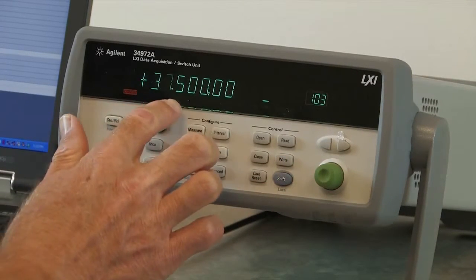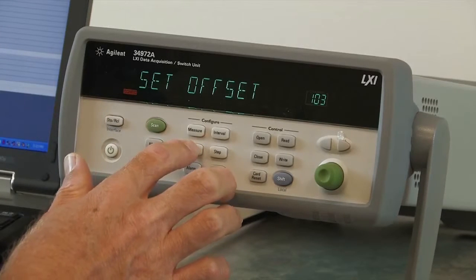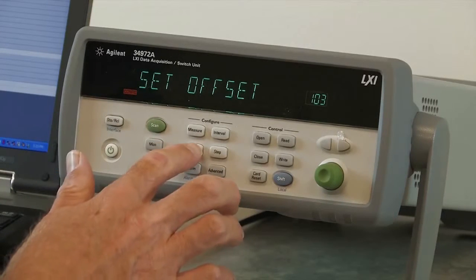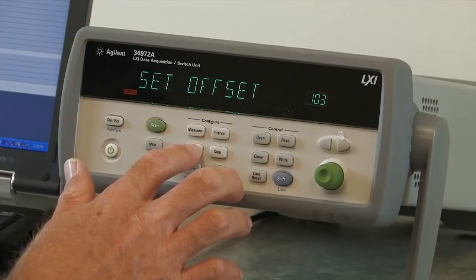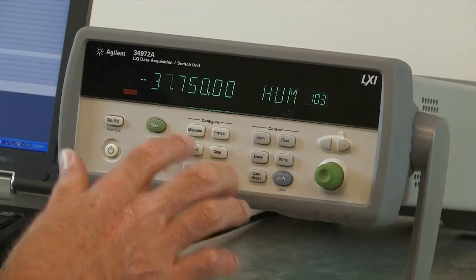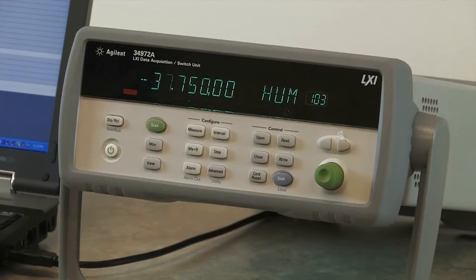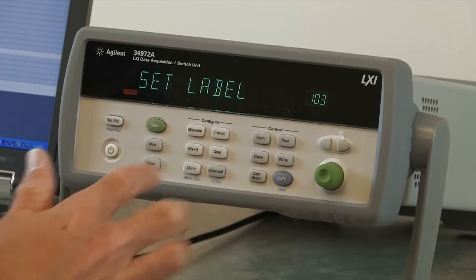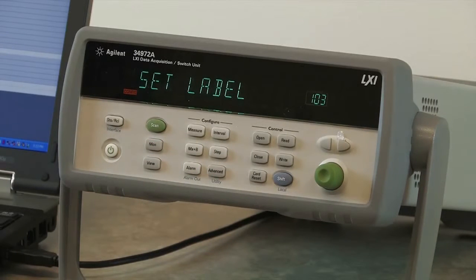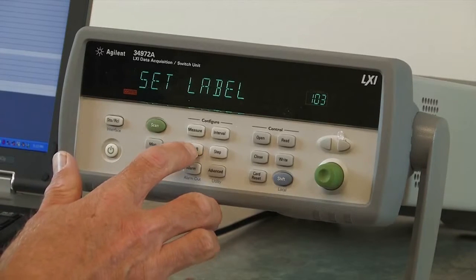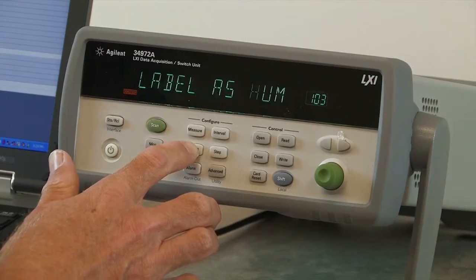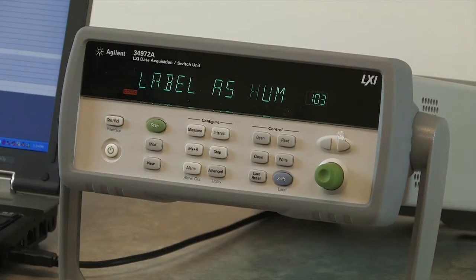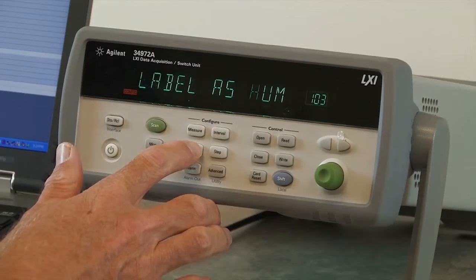I'm going to set the gain to 37.5. I'm also going to set an offset, and again from the datasheet, the offset I need to set is negative 37.75. Lastly, I want to set the units. Instead of being DC volts, I want to set a unit value that makes more sense for the measurement we're making. Since it's humidity, I've selected 'hum' as our label for this channel.